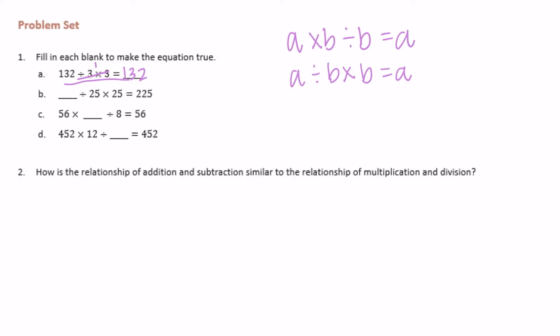The next one is missing the first blank. We divide by 25 and multiply by 25 and got 225, then what we started with would be 225.